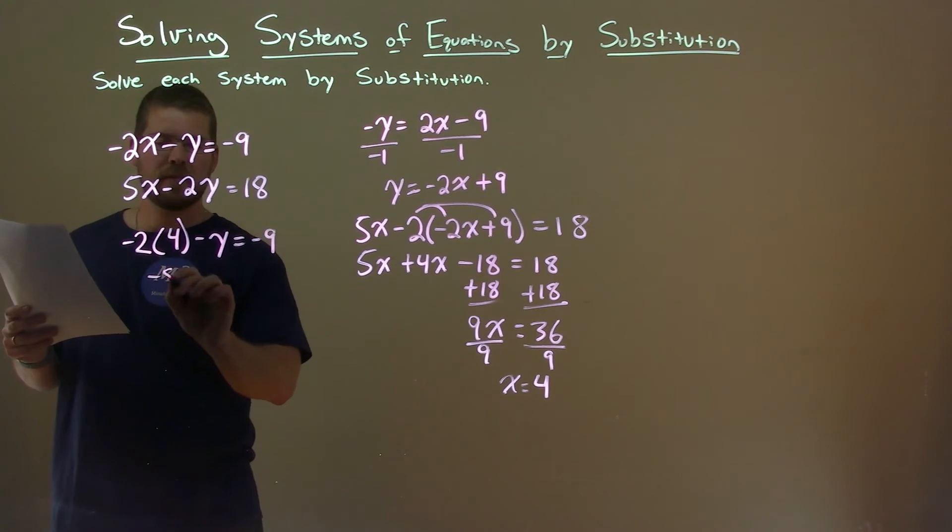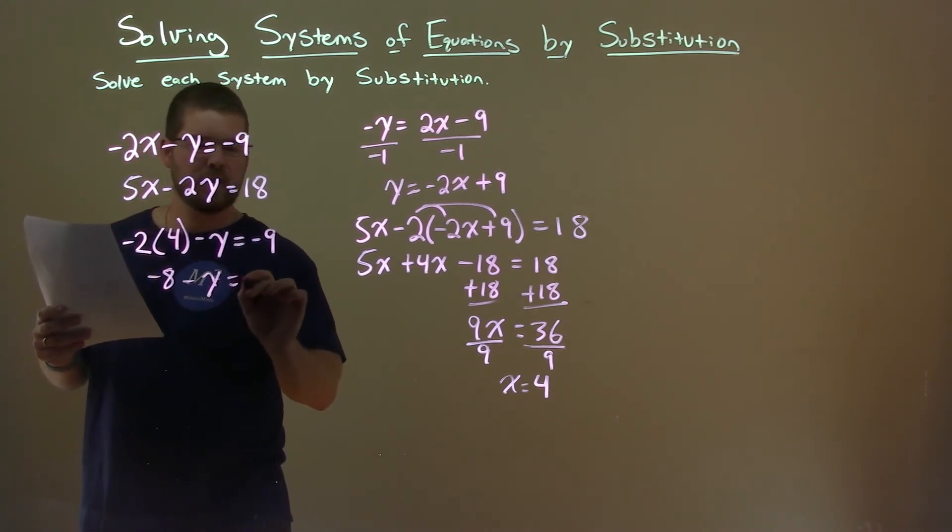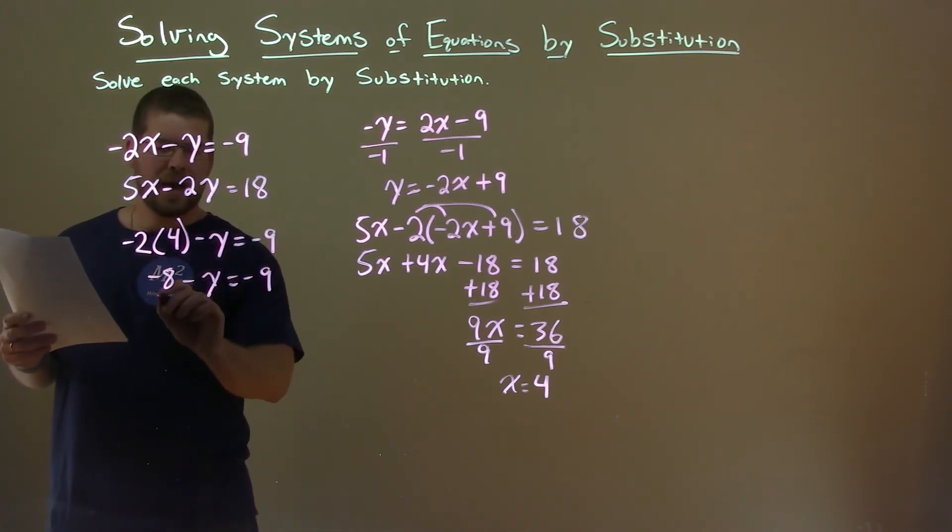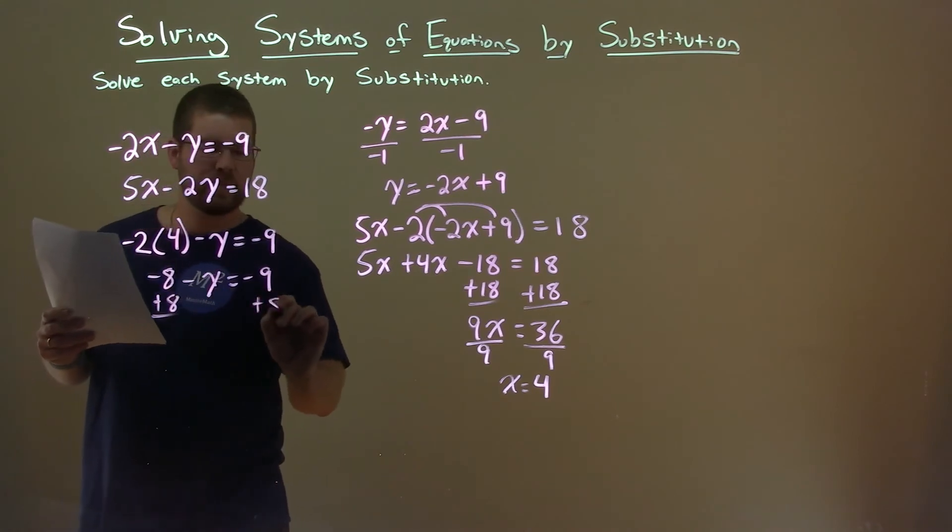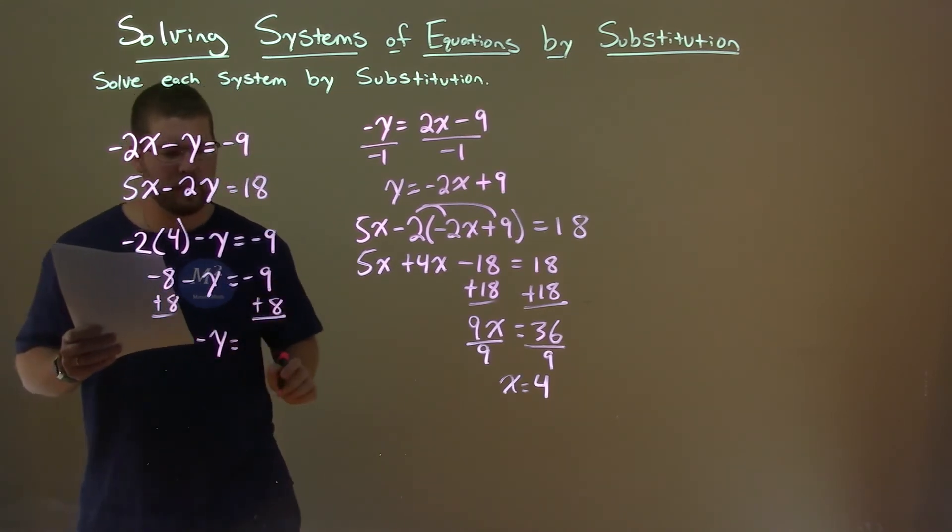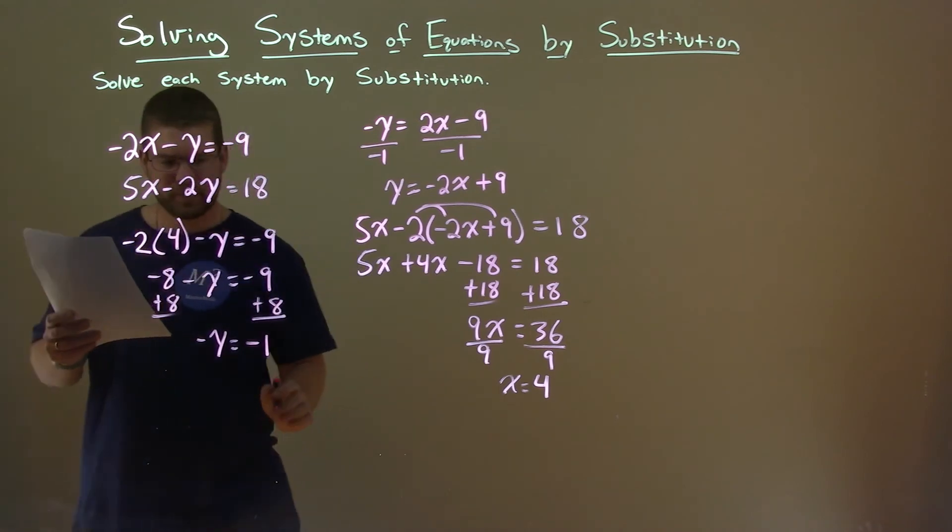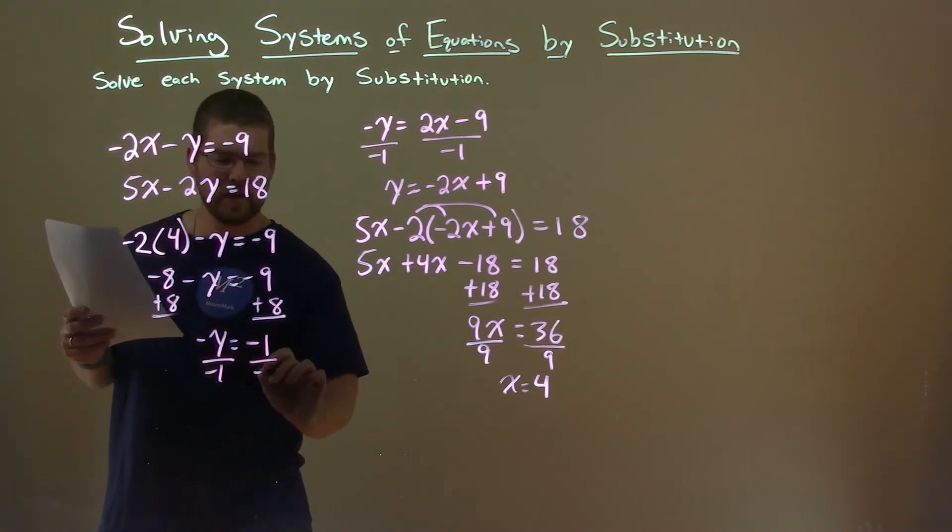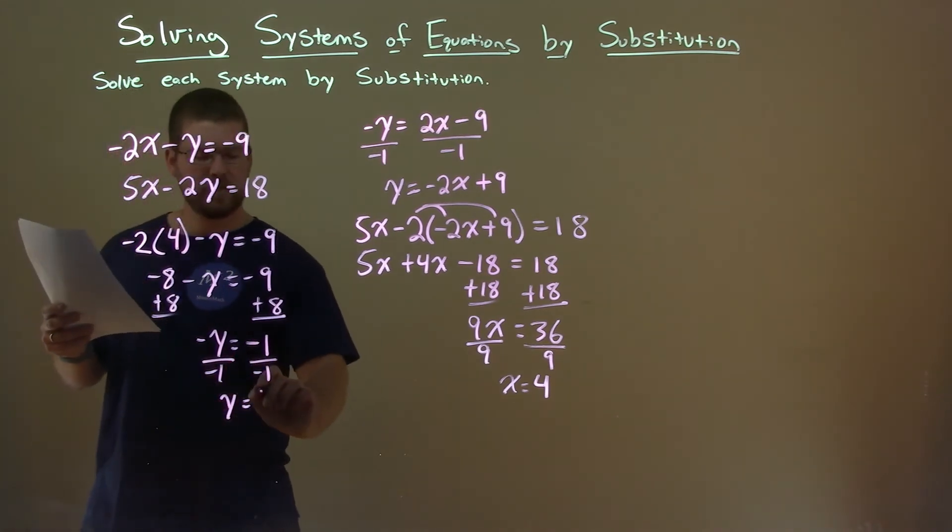Negative 2 times 4 is negative 8. Minus y equals negative 9. Add 8 to both sides. Negative y equals negative 9 plus 8 is negative 1. Divide both sides by negative 1 to keep y positive, and y equals, well, negative 1 divided by negative 1 is positive 1.